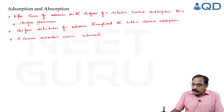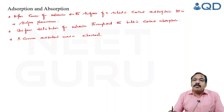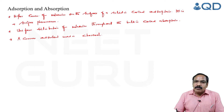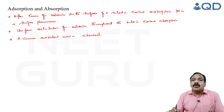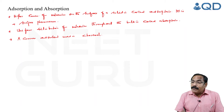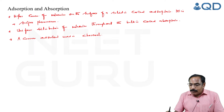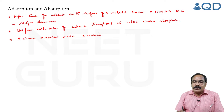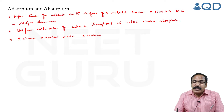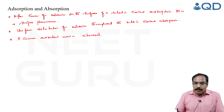We have two more terms: adsorbent and adsorbate. The surface where adsorption occurs is called the adsorbent — for example, charcoal is the adsorbent. Whereas the molecules that are deposited are called the adsorbate.